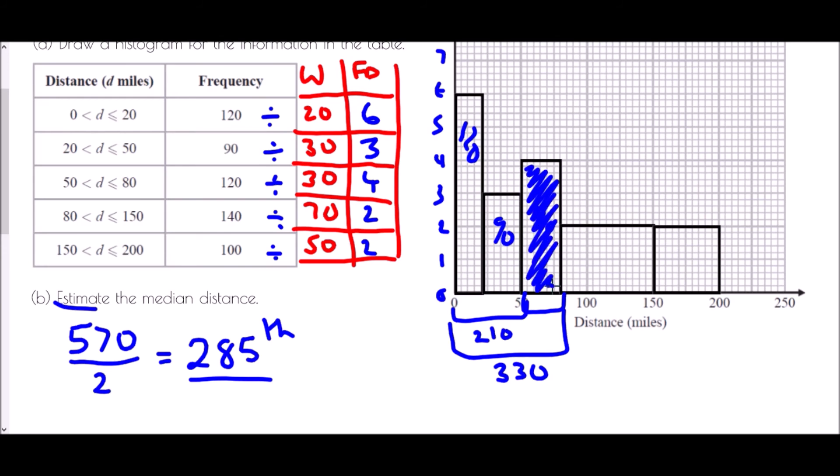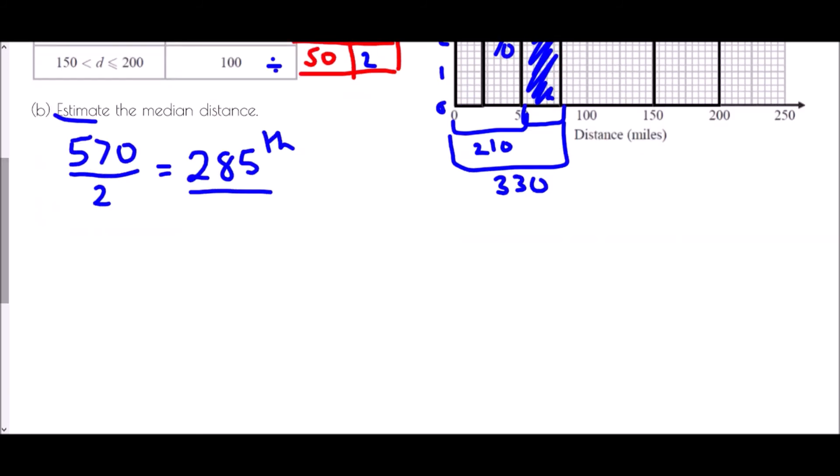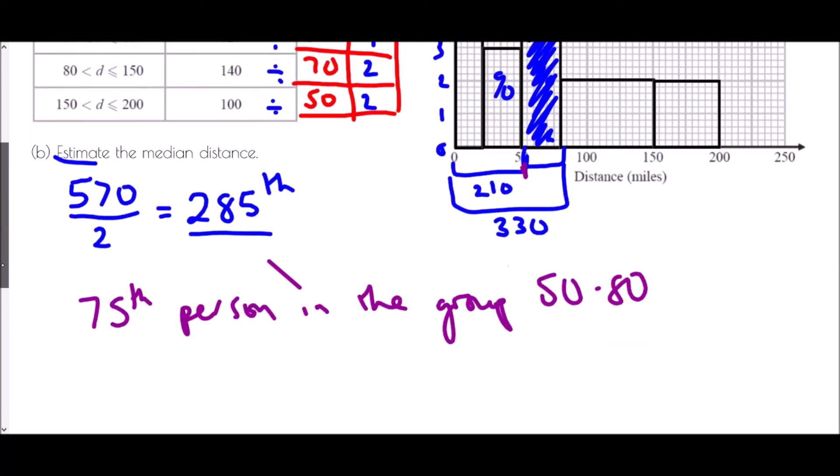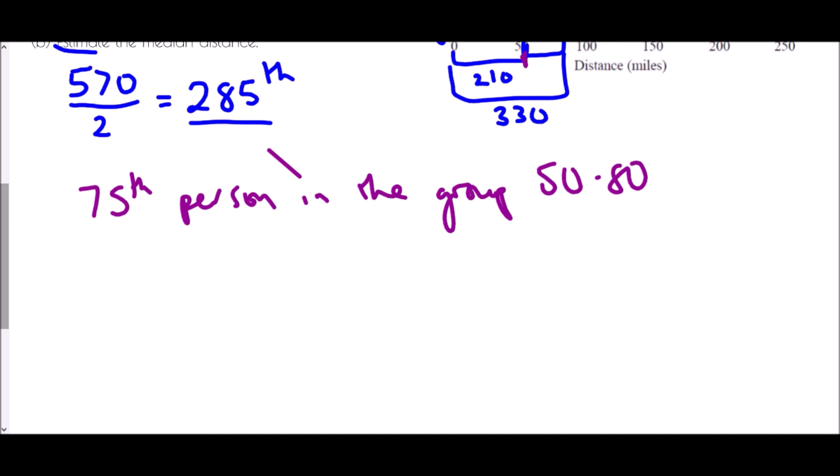Now the question is how far into the group are they? Well we had 210 people at the start of the group and we wanted the 285th and so it is the 75th person in the group 50 to 80.